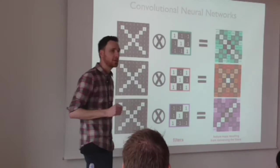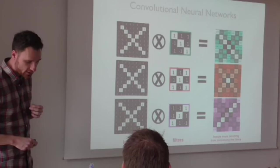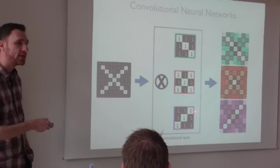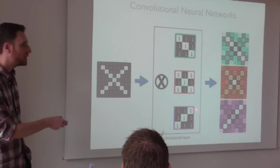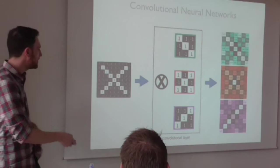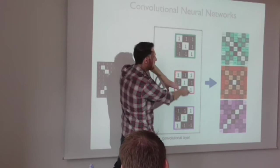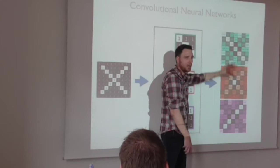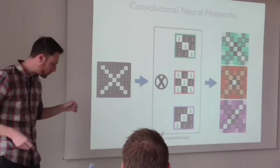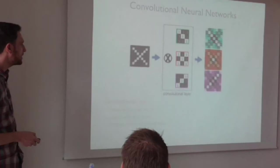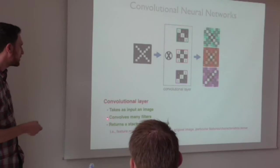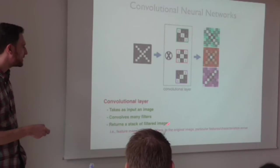This is called a convolutional layer in a CNN. It's just a stack of many filters. In this case I gave you the filters, but the network is actually going to learn what they should be. You apply the image to each one of those filters, do the convolution, and get as output a stack of feature maps, which are other images at the same resolution as the original, capturing the features you're trying to detect.